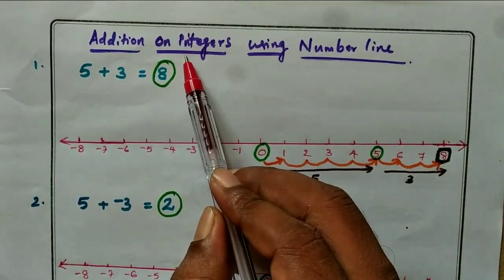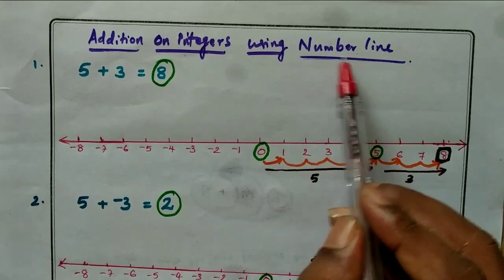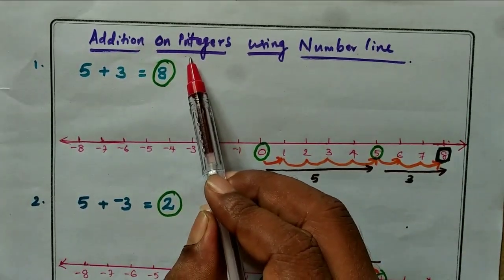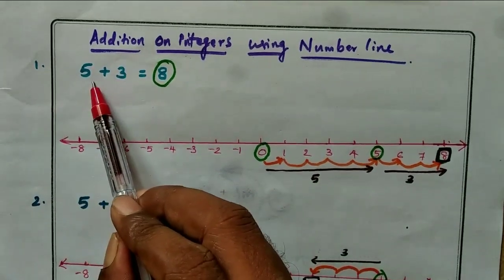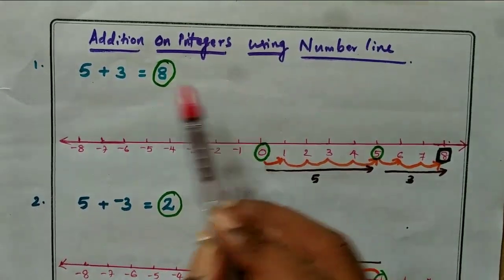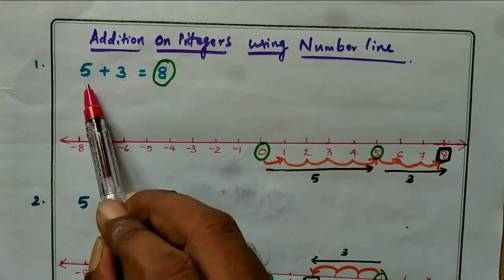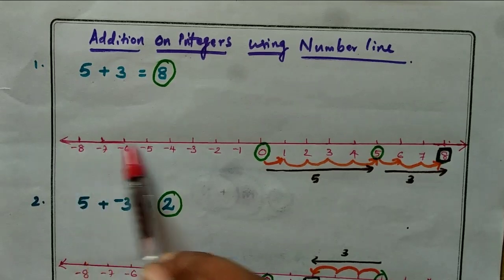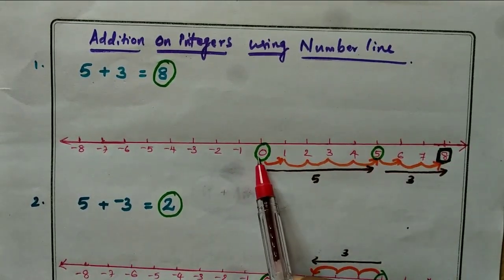Now we are going to start addition on integers using a number line. In the first example: 5 plus 3 equals dash. We know 5 plus 3 equals 8. On the number line, positive numbers are to the right and we start from 0.